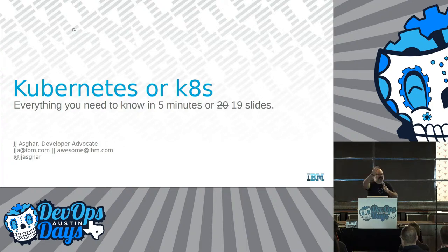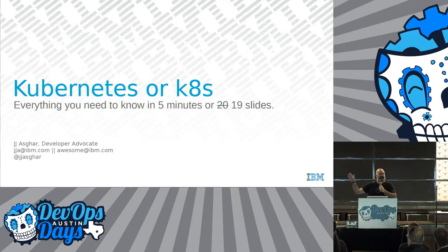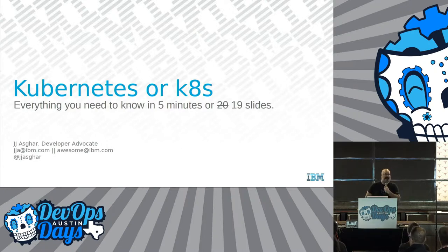Hi, I'm JJ. I work at IBM and I'm going to talk about everything you know about Kubernetes in 19 slides. And yes, I do actually have awesome@ibm.com — that's my email address.